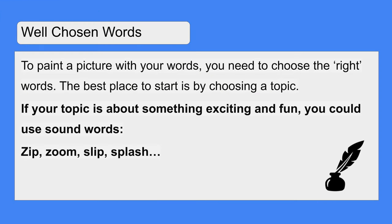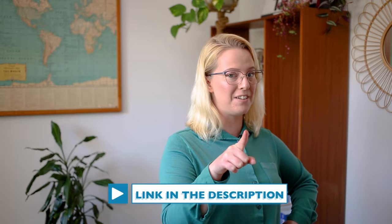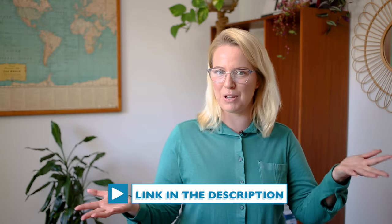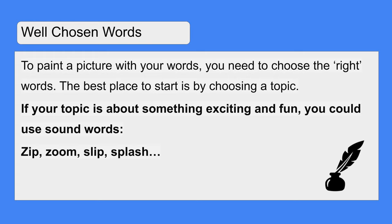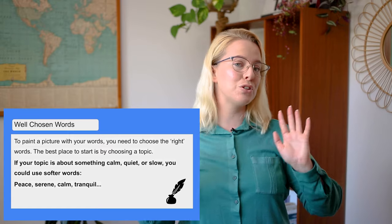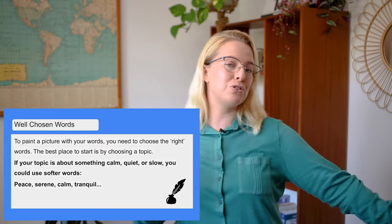Or if your topic is about something fun and exciting, you could use some sound words or onomatopoeia — we've already done a video about that if you'd like to have a look. Some of the sound words we could use are zip, zoom, splish, splash. If your topic is about something calm, quiet or slow, you could use some softer words like peace, serene, calm, tranquil.